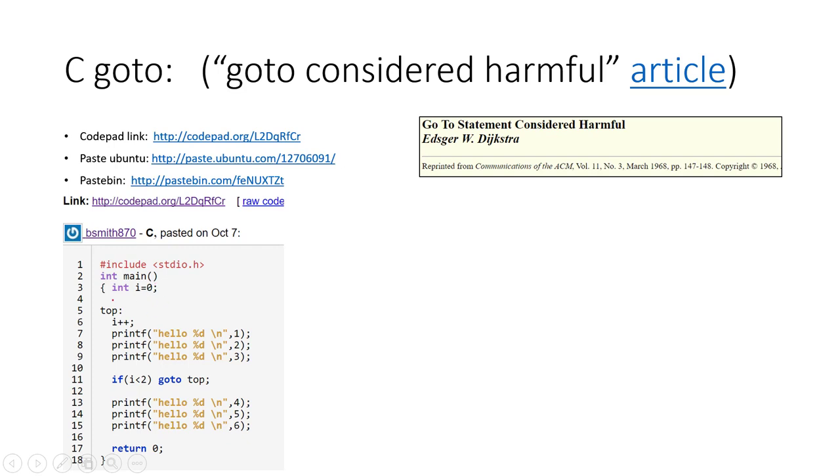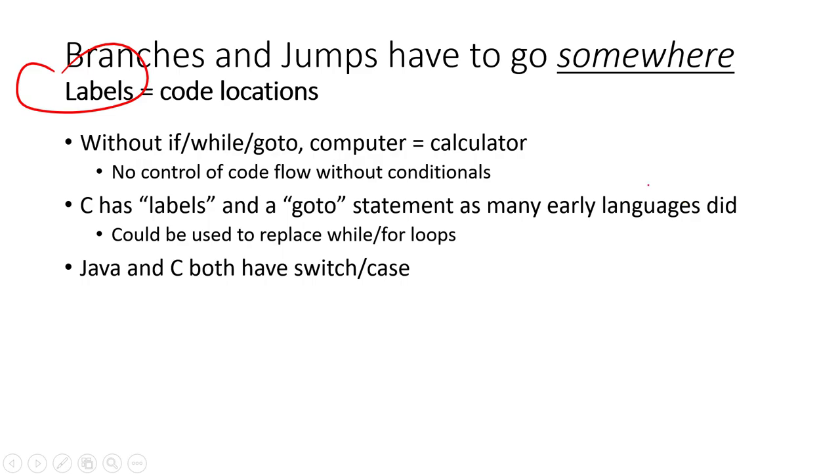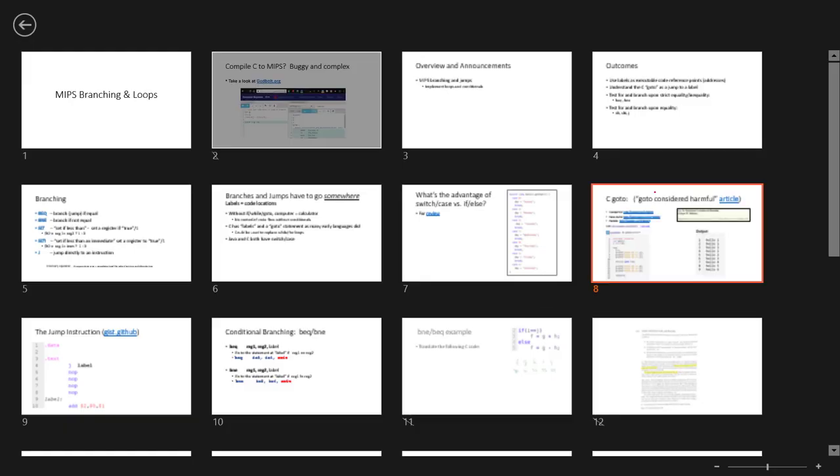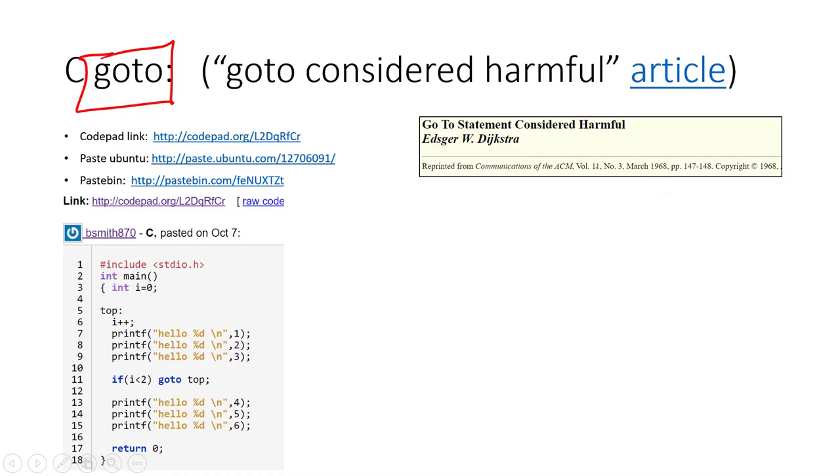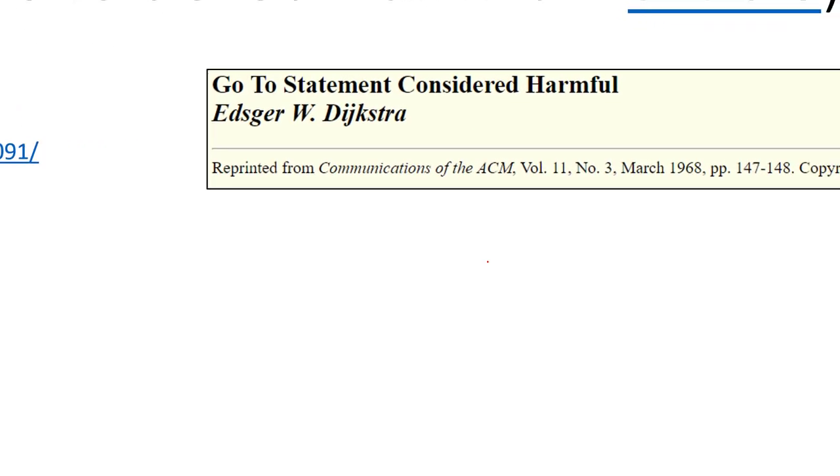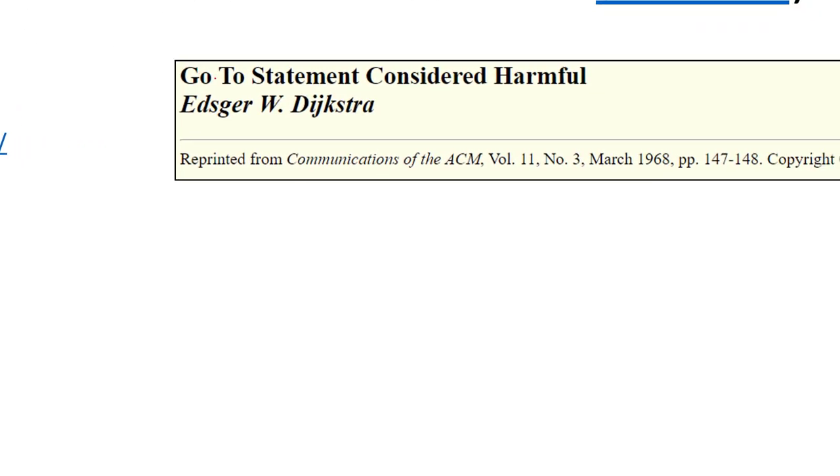So I'll have you take a look at this. I'll just spend a quick second on this: the C goto statement. At one point it was considered harmful. Dijkstra, Edsger Dijkstra, back in 1968. Back in 1968, at some point he wrote this article called 'Go-To Statement Considered Harmful.'